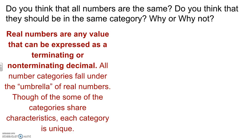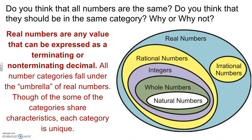Real numbers are any value that can be expressed as a terminating or non-terminating decimal. All number categories fall under the umbrella of real numbers. Though some of the categories share characteristics. So again we're only talking about real numbers. We haven't explored into any other concepts yet. Complex numbers. Something we'll learn about in the future.